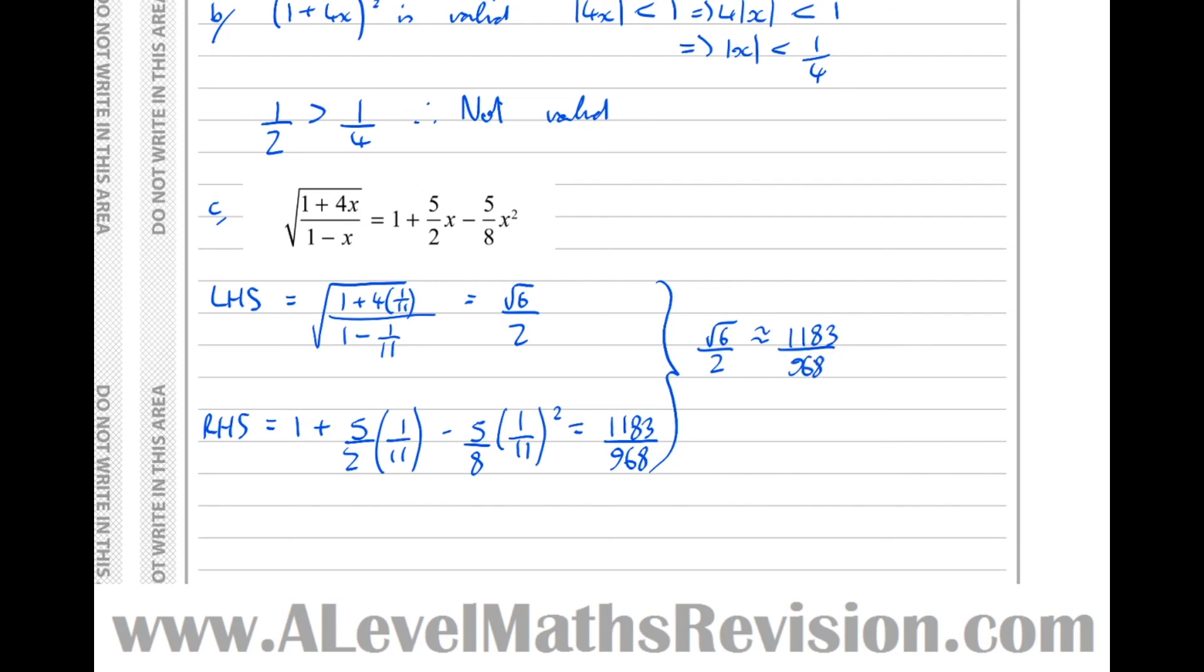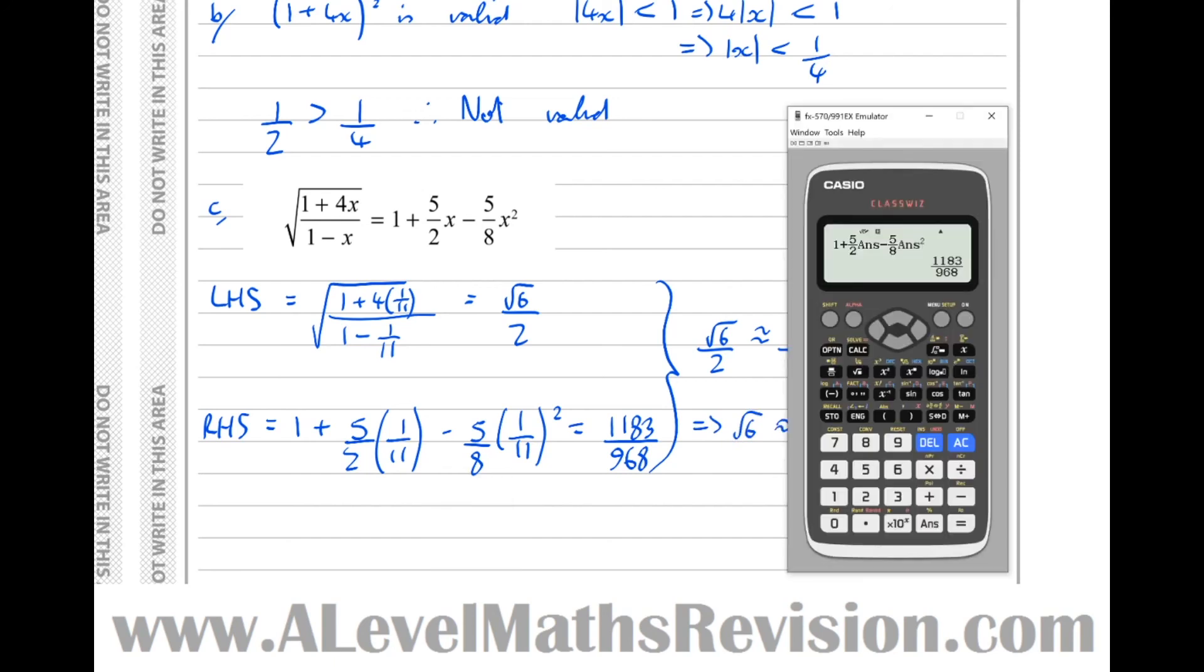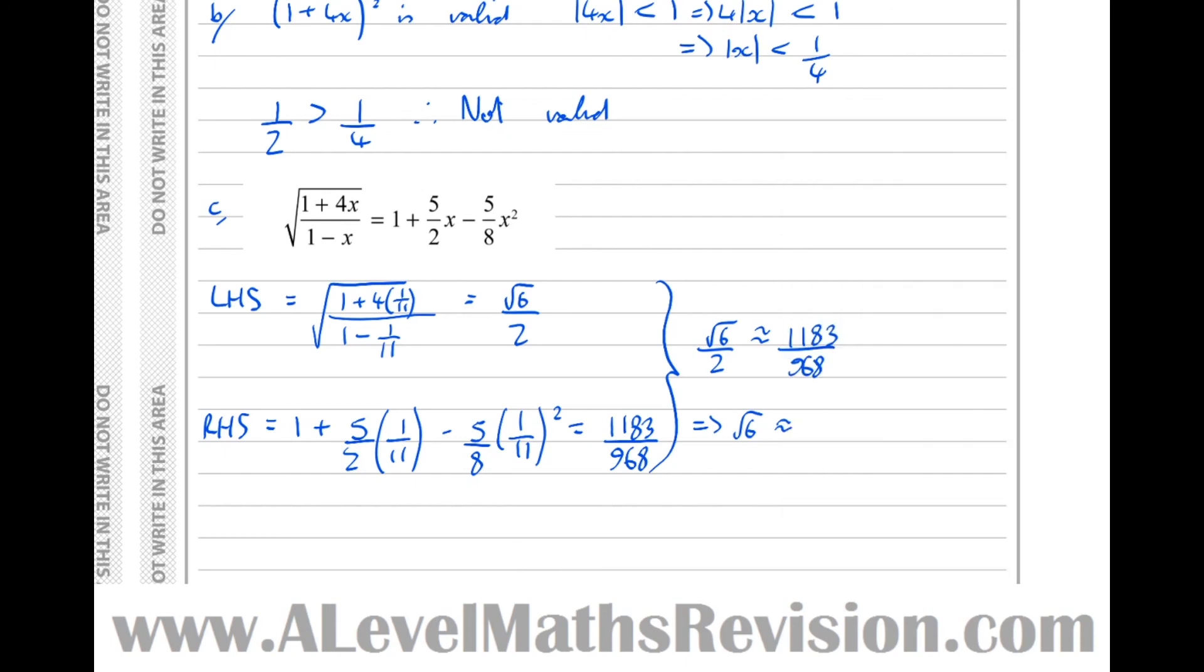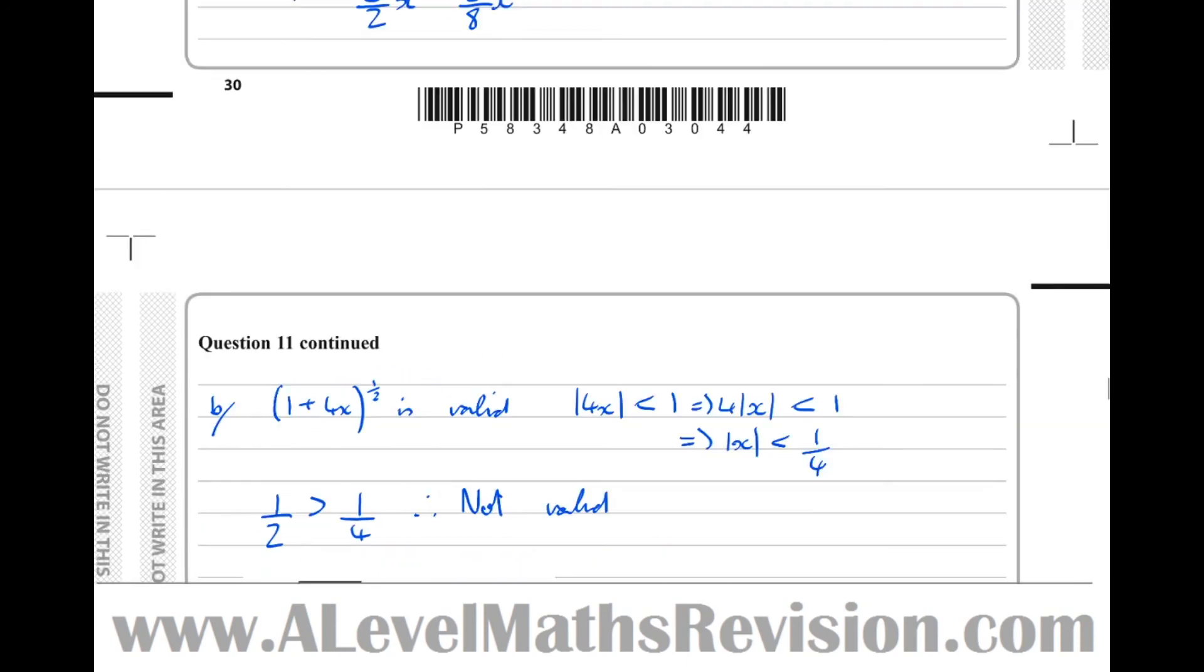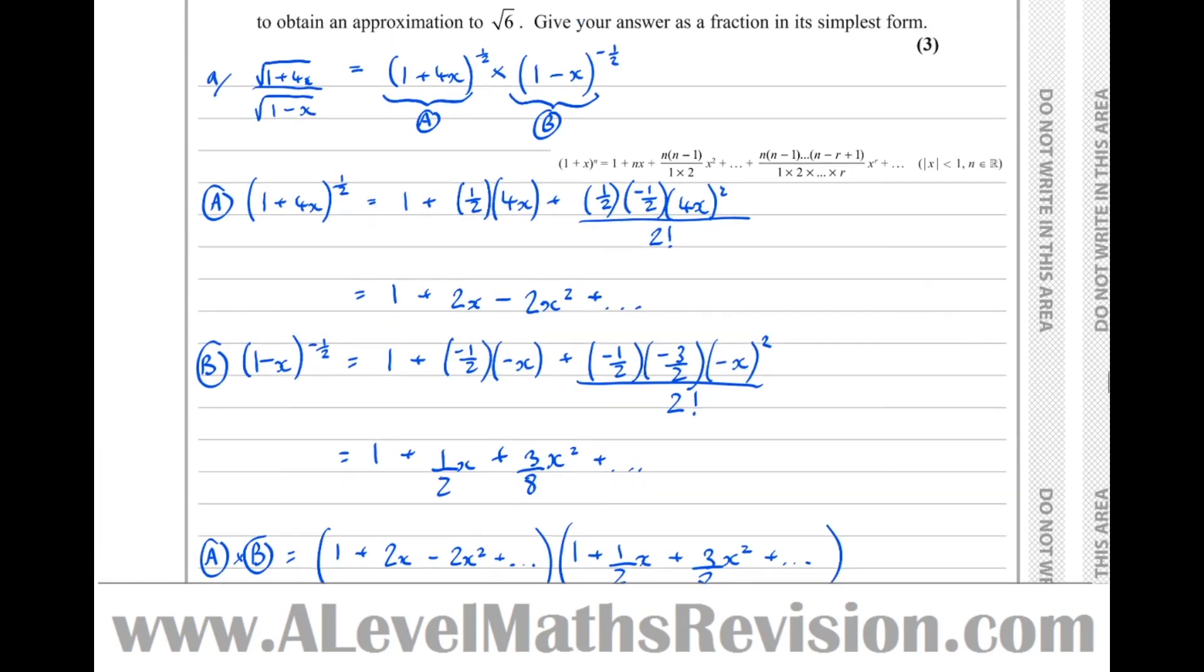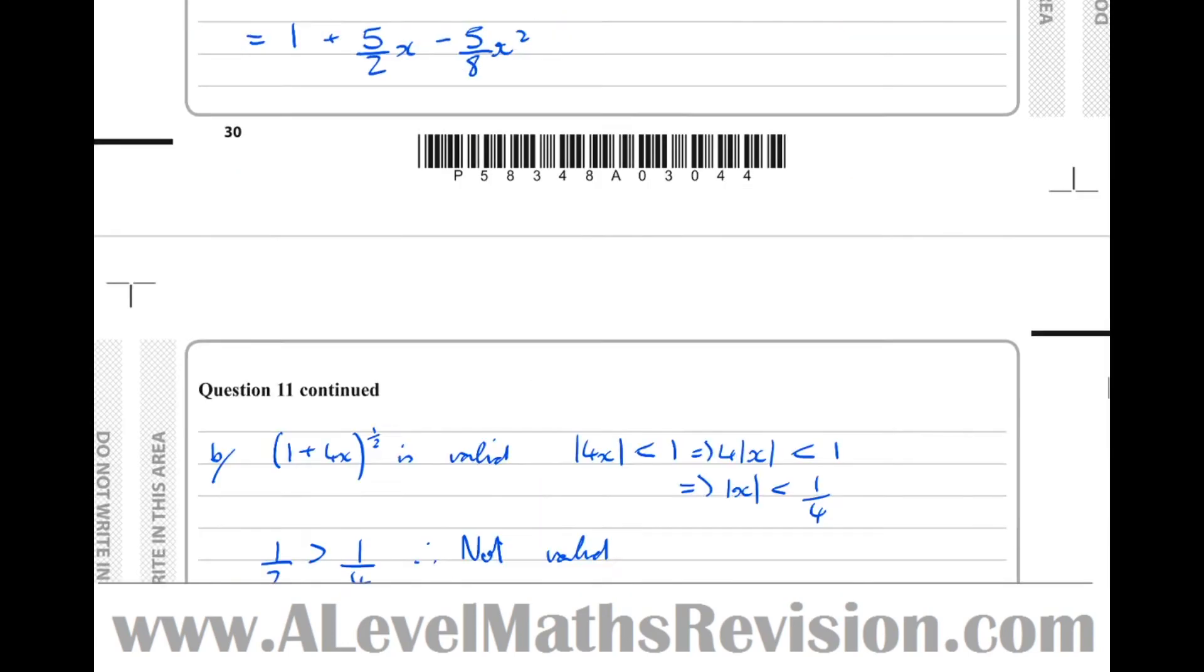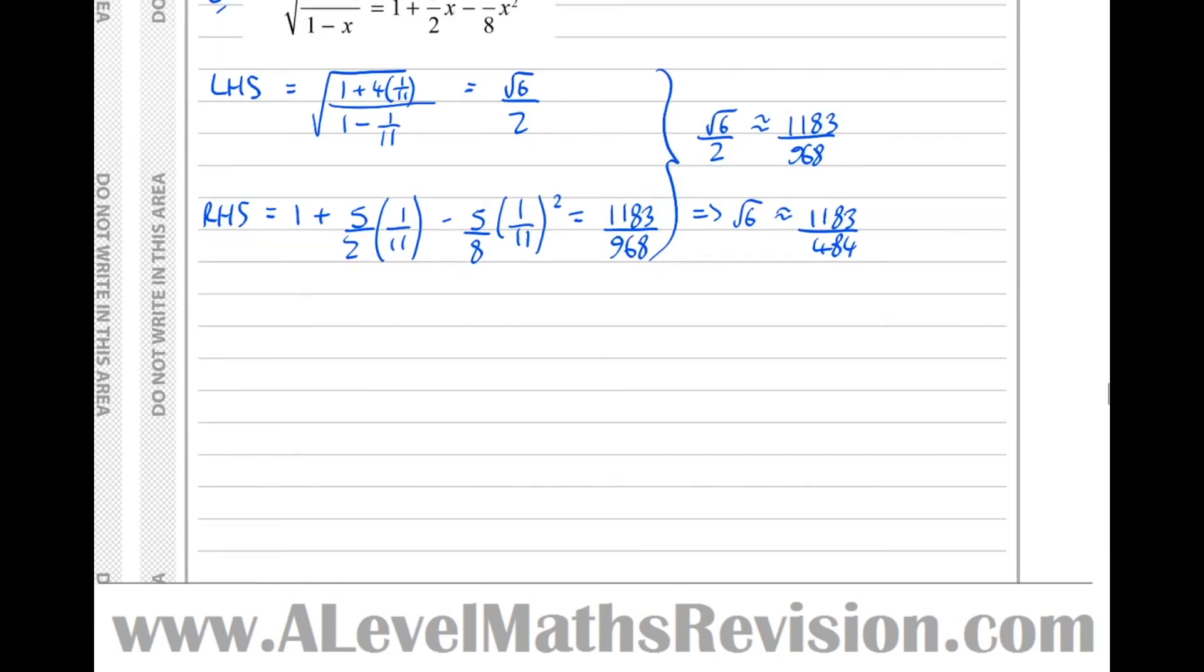So times them both sides by 2. That implies that root 6 is approximately equal to that times 2, which is 1183 over 484. And let's see, remind ourselves whether the question asks for any particular number of significant figures. No, give your answer as a fraction in its simplest form, which we can see is what we've done here. Therefore, we're done.